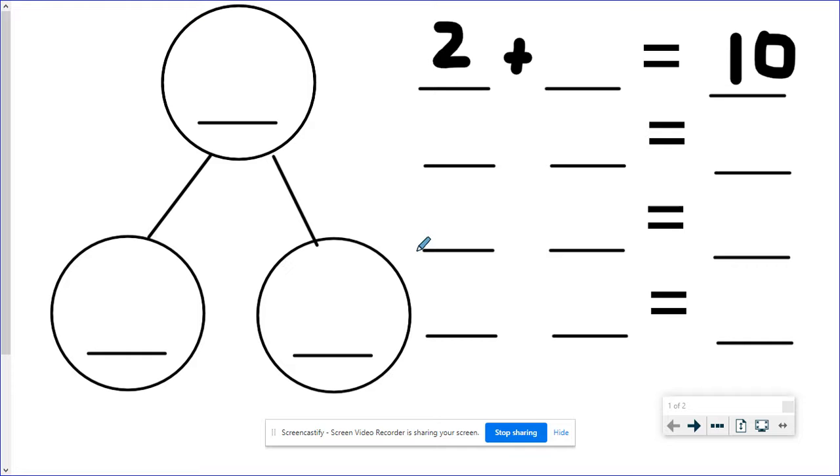As you can see here, we have a missing part in this equation. We have 2 plus an unknown number equals 10. So there are a couple of ways we could do this. One thing that we did a lot in first grade this year is we would put 2 in our head and then we would count up until 10 and see how many hops we had to go up the number line. Now that is a great strategy. But when you are working with larger numbers, it's not a very efficient strategy.